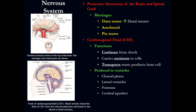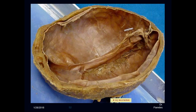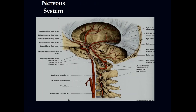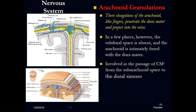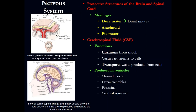Talking about the nervous system — what I want you to remember is the CSF, the cerebrospinal fluid. It runs through the ventricular system and through the meninges covering the brain. The meninges are the dura mater, arachnoid, and pia mater. The subarachnoid space is between the arachnoid and the pia mater — that is where the CSF runs.